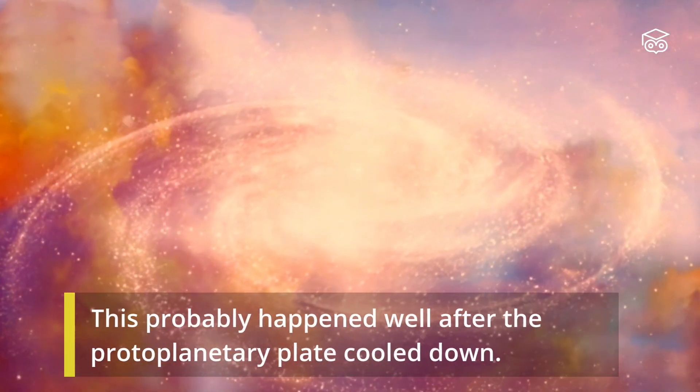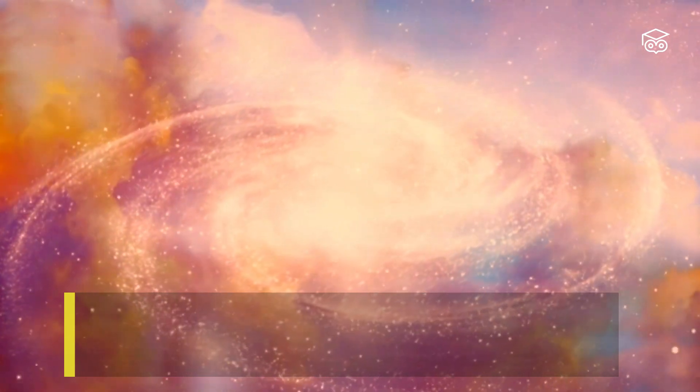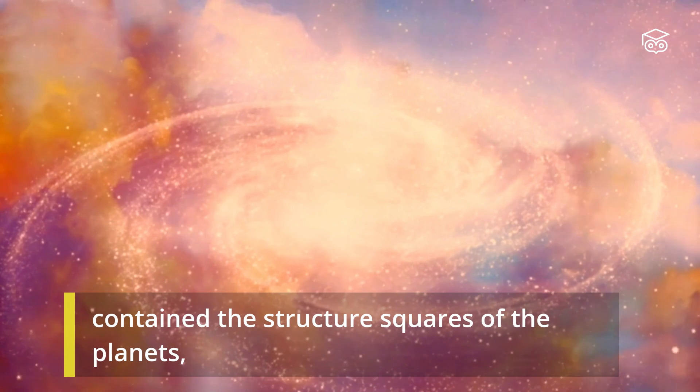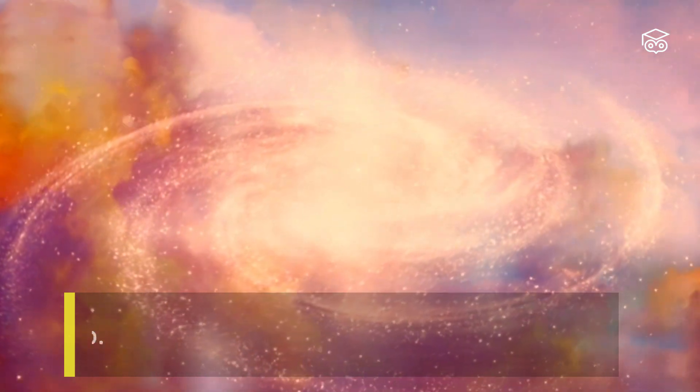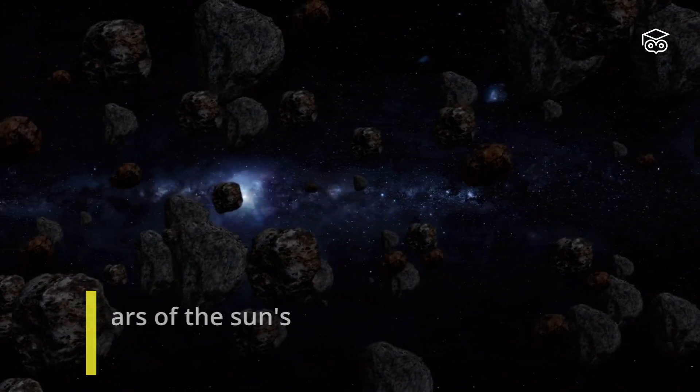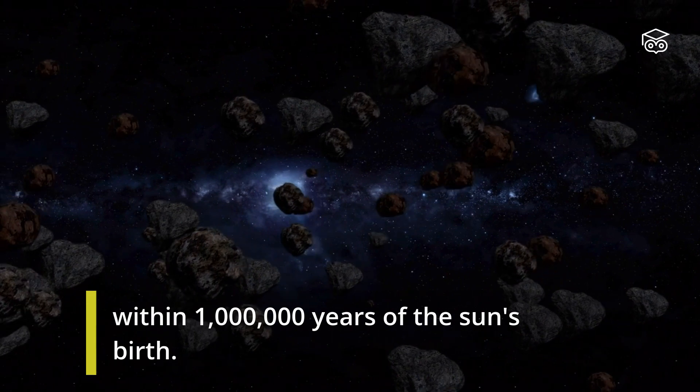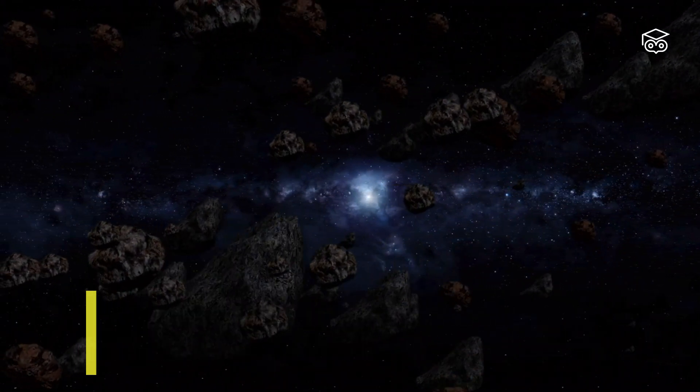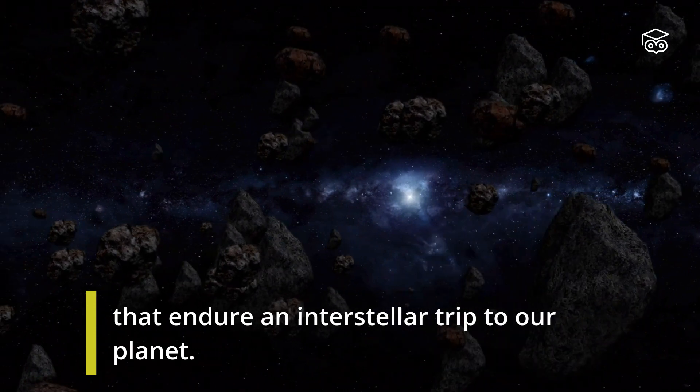This probably happened well after the protoplanetary disk cooled down. The dust storm and gas that surrounded our young sun contained the structure blocks of the planets, formed and heated up. Carbon was additionally likely incorporated into solids within one million years of the sun's birth, which proposes that carbon is the foundation of life on Earth that endured an interstellar trip to our planet.